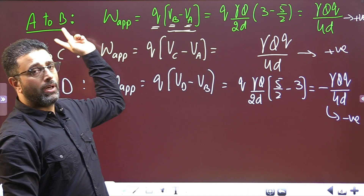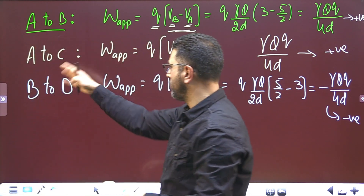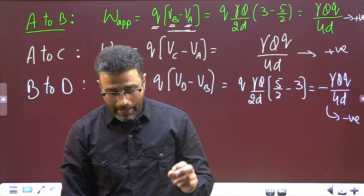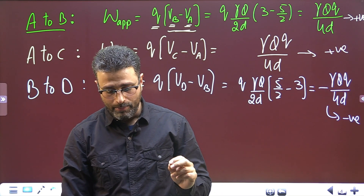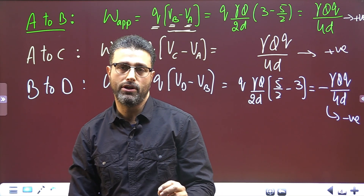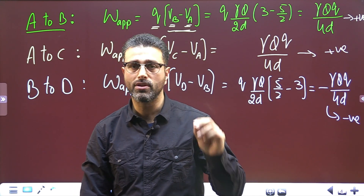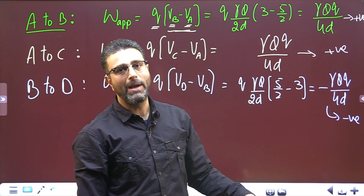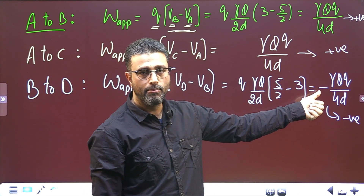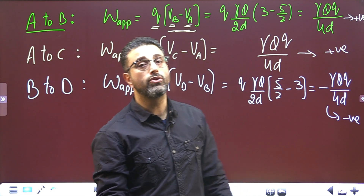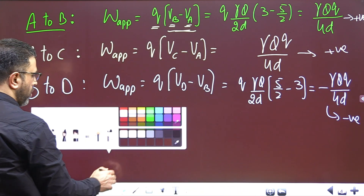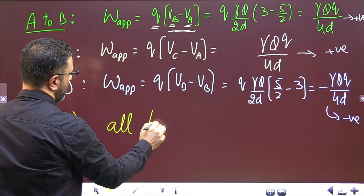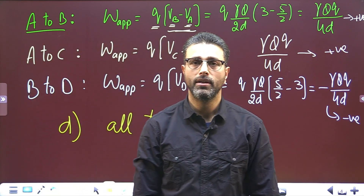So summarizing: work done moving charge q from A to B is positive (γQq/4D), from A to C is positive (γQq/4D), and from B to D is negative (−γQq/4D). For Part D — rank those moves according to the magnitude of the work done — the magnitude is γQq/4D for all three cases. The only difference is the sign for B to D, but we are not concerned with sign here. So magnitude-wise, all three are a tie.